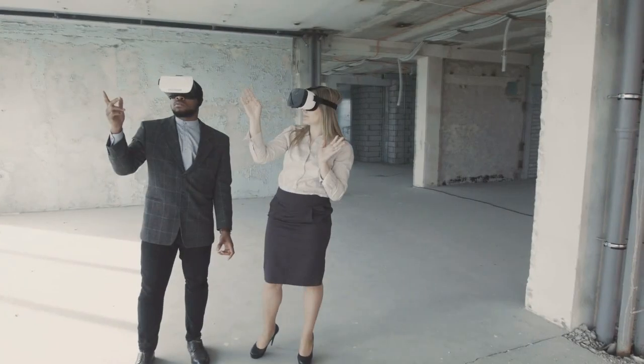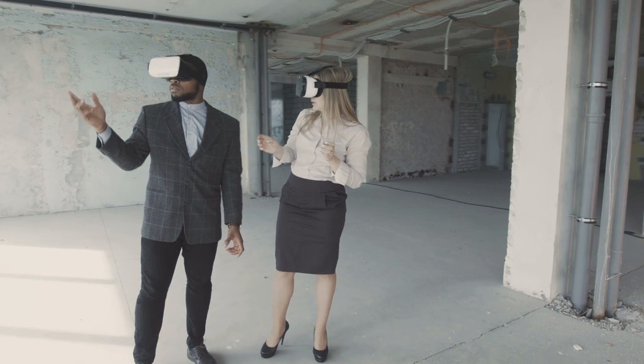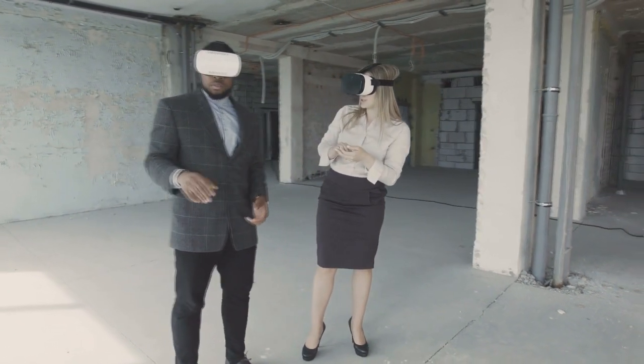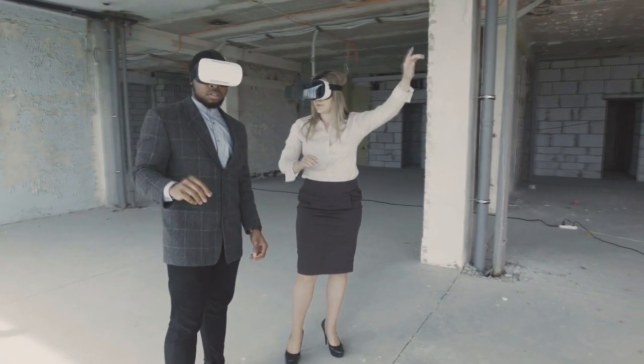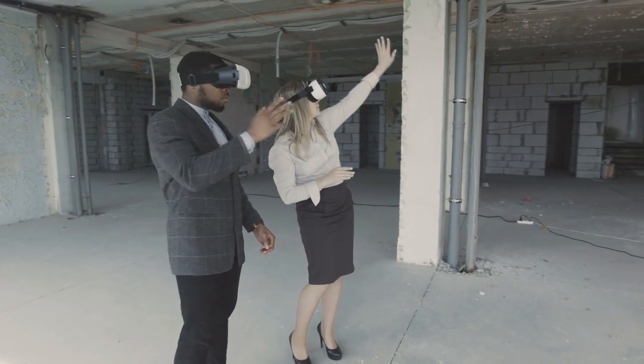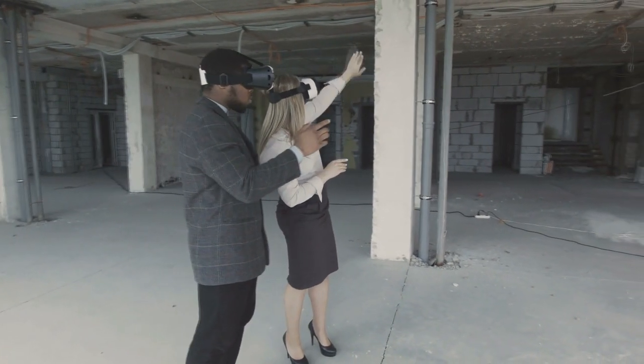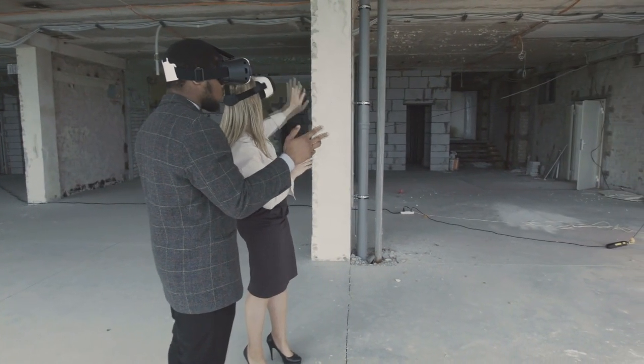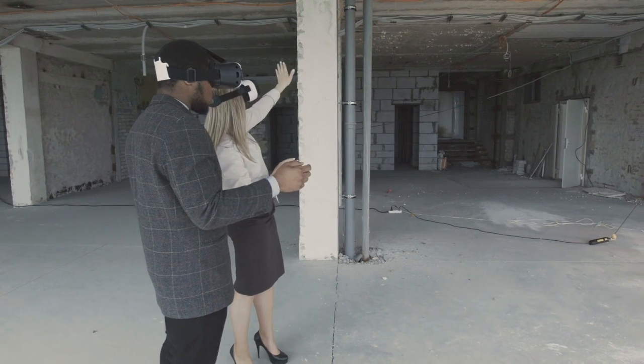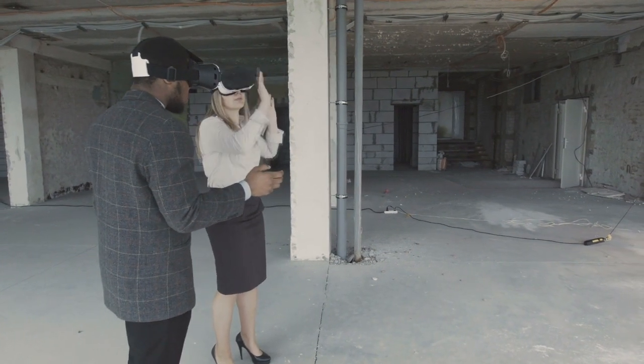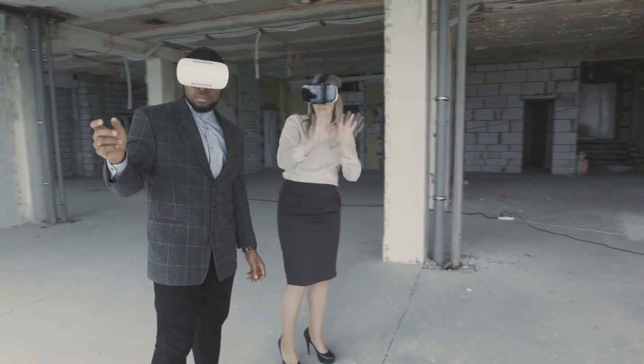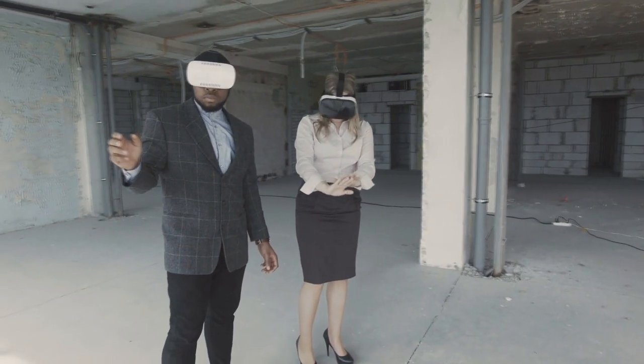All of our future goals and dreams are not only a reflection of subconscious thinking, they are also mediated by the reticular activating system. This part of the brain serves as a filter between the conscious mind and the subconscious mind. It takes instructions from your conscious mind and passes them on to your subconscious mind.